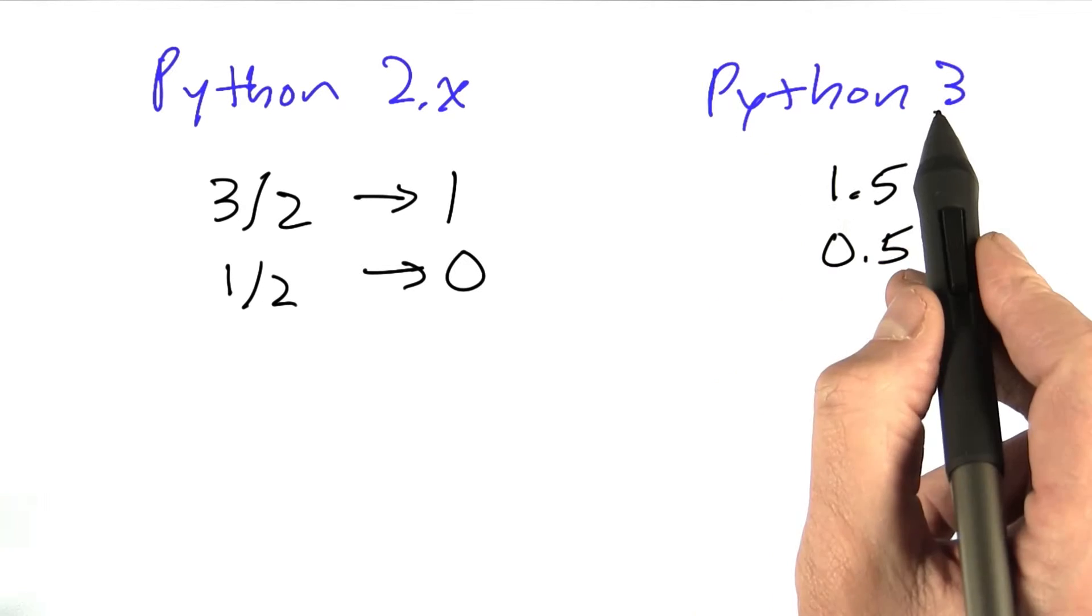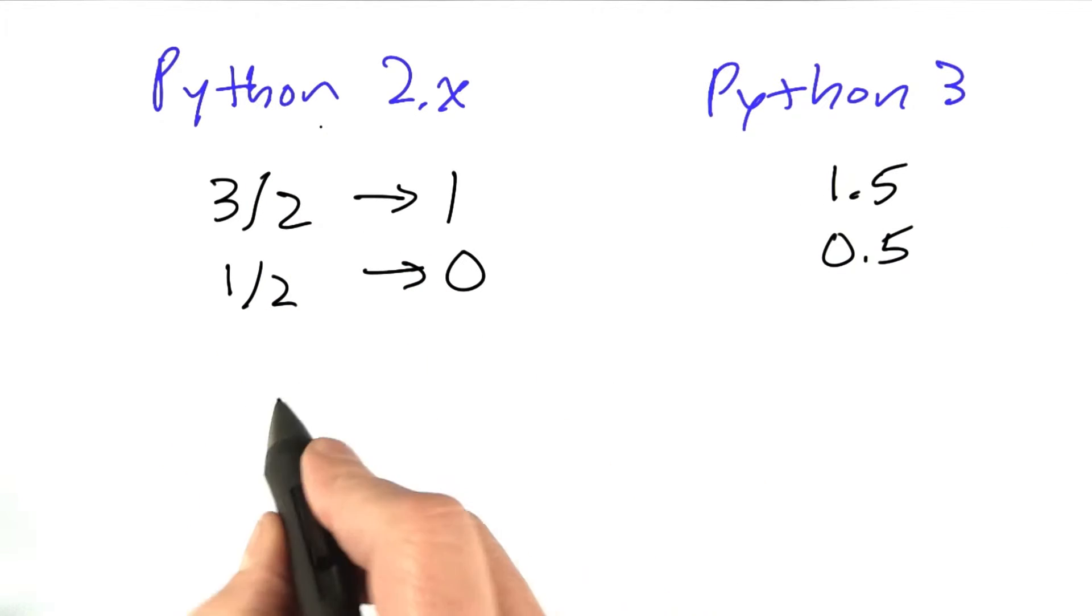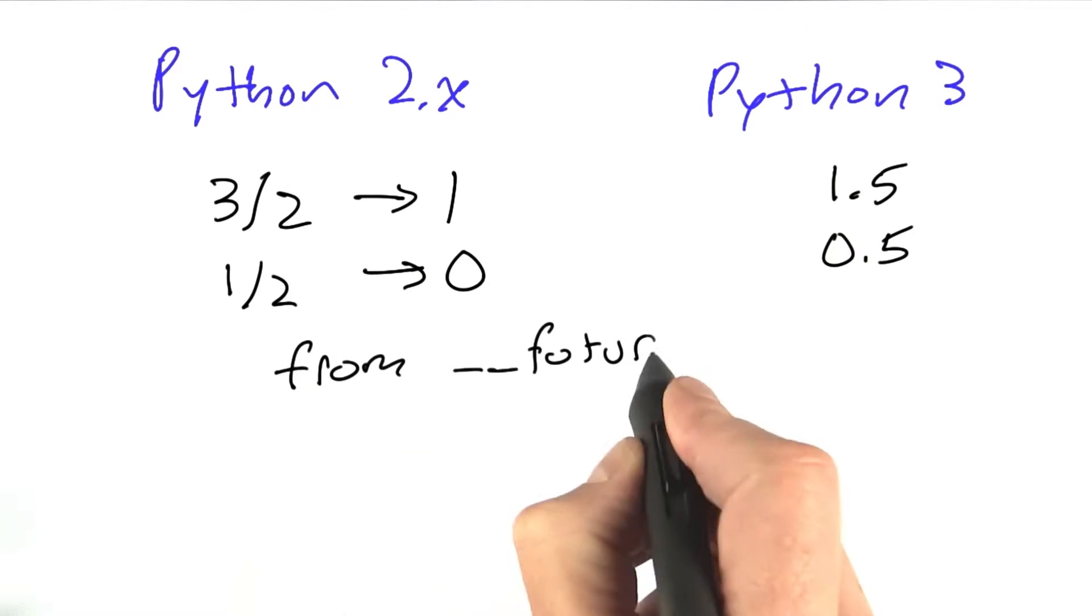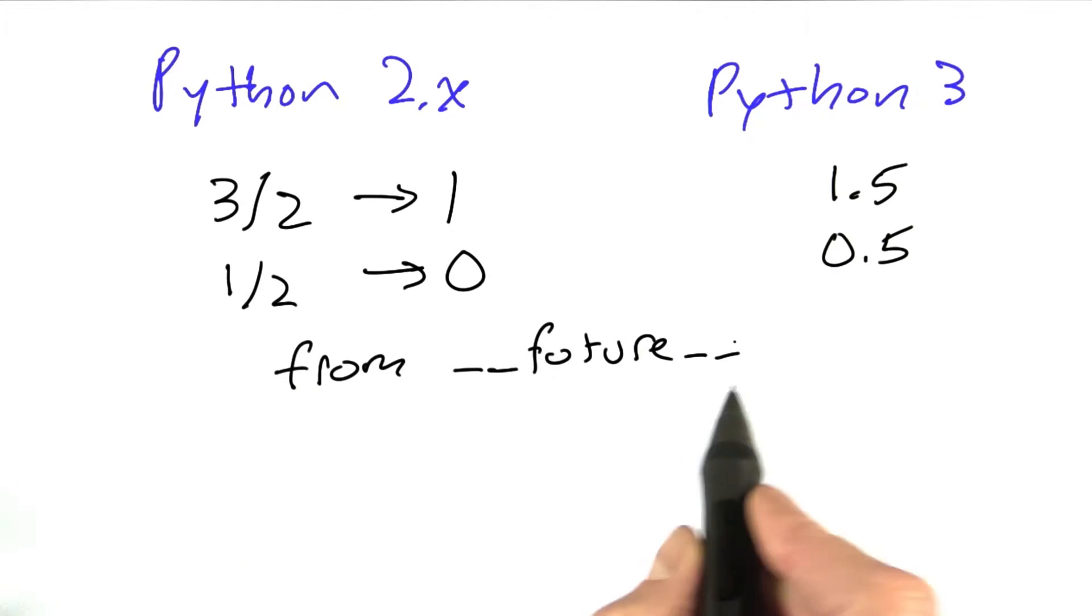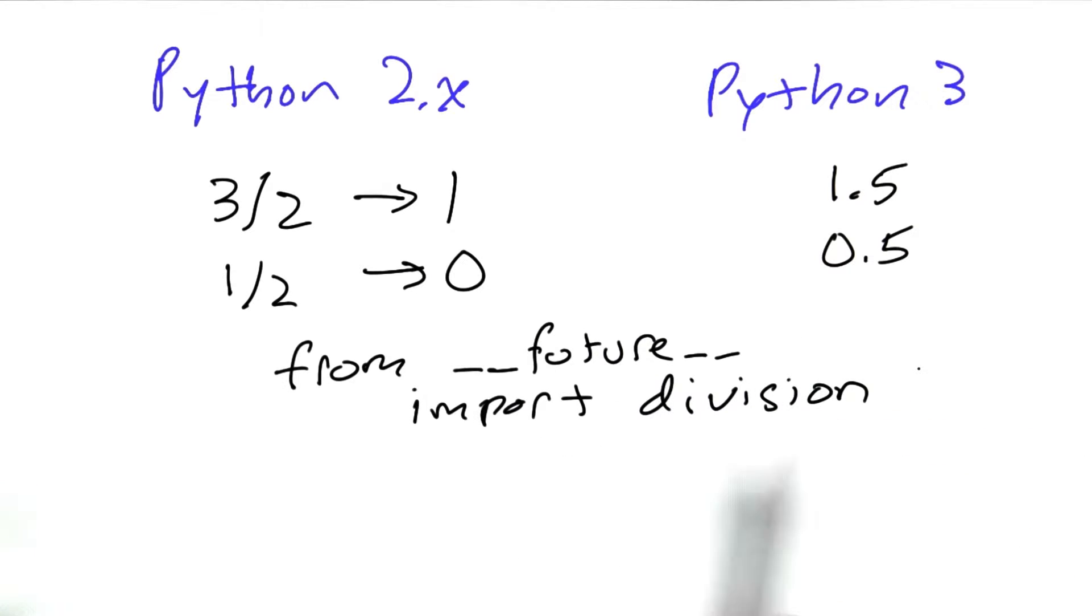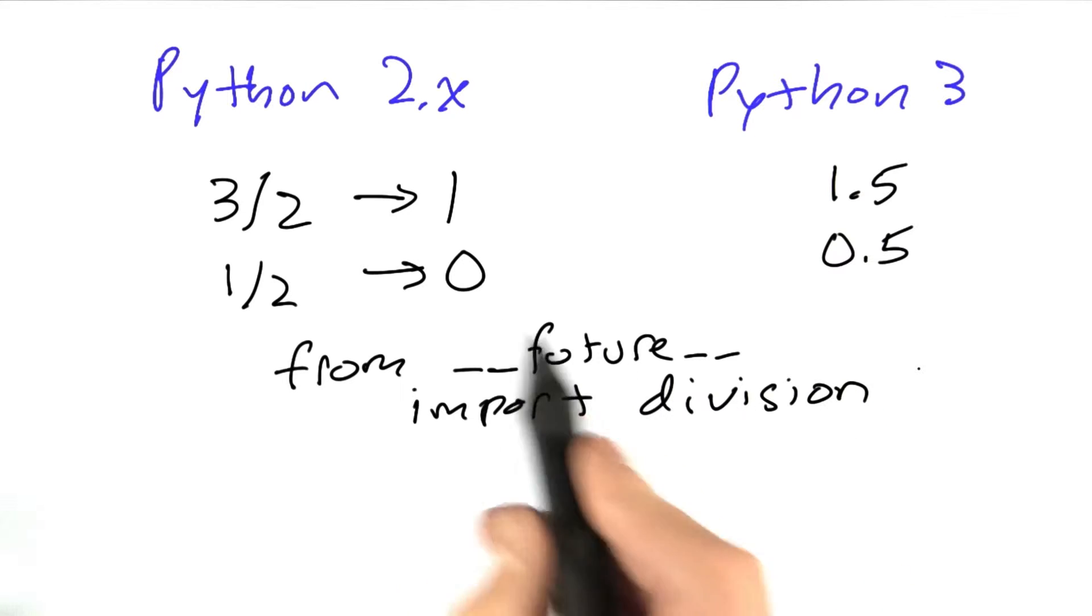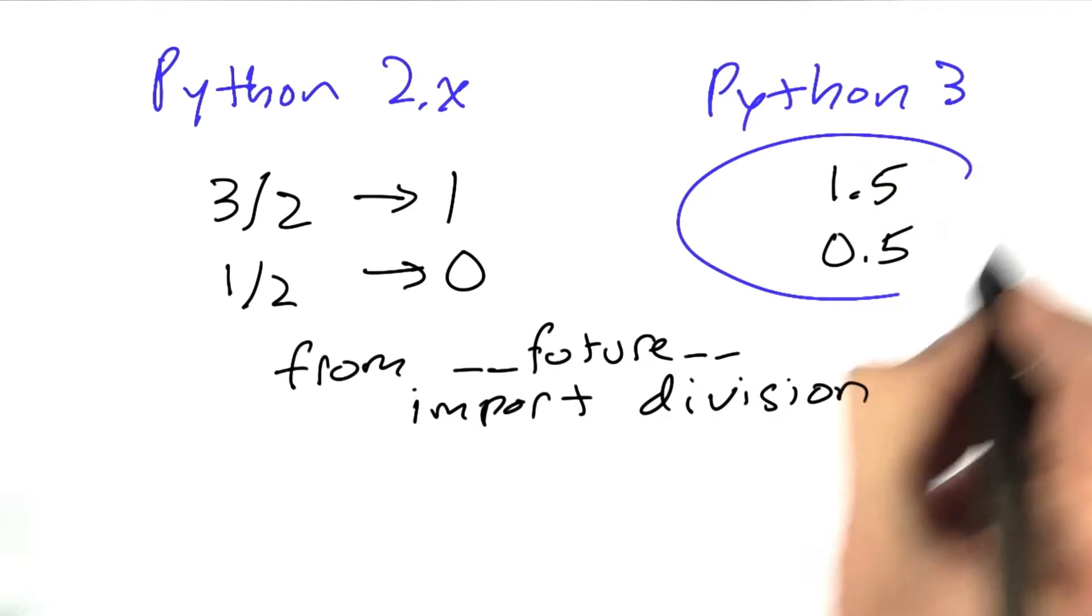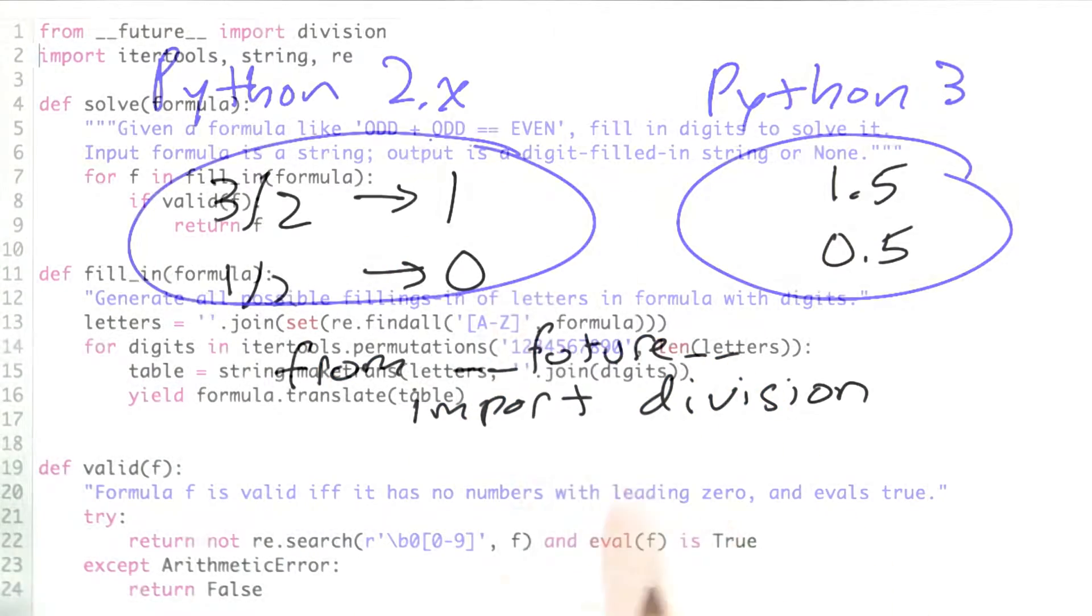Now, if you want this kind of behavior in Python 2, then you say from __future__, with two underscores on either side, import division. And I want that because in my cryptarithmetic problems, I really prefer this type of answer and not that type of answer.